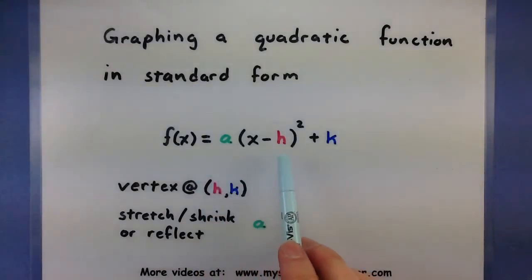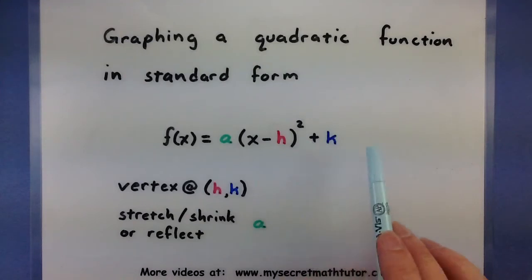So in standard form, we have usually an x minus a number component, there's our squared, a number out front, and usually plus or minus some number on the end.